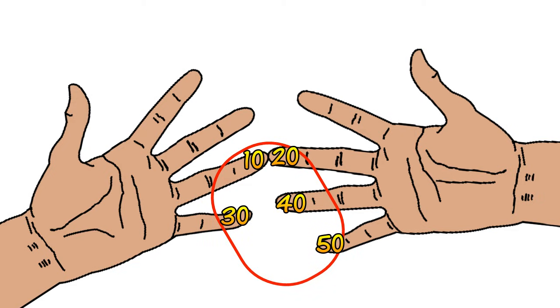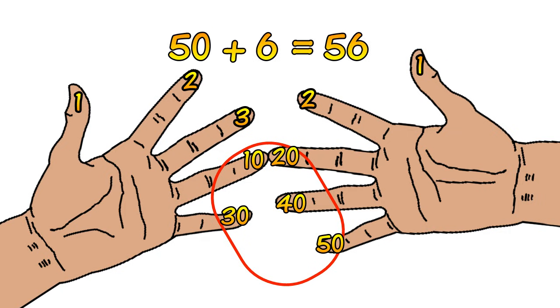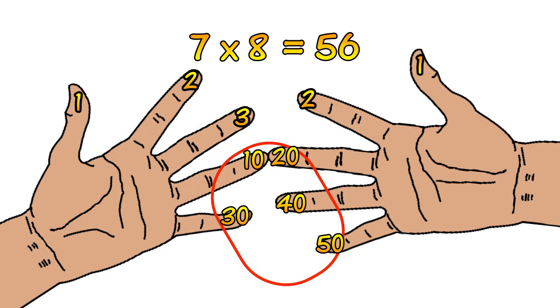And then we multiply all the single unit fingers above the join. So we have 3 on the left and we multiply that. We times that by the 2 on the right. So 3 times 2 is 6. And we add the two results. So 50 plus 6 is 56. So therefore 7 times 8 is 56. And that's all there is to it.